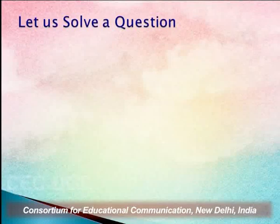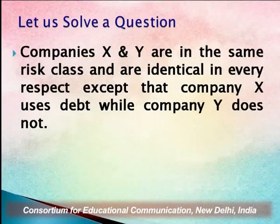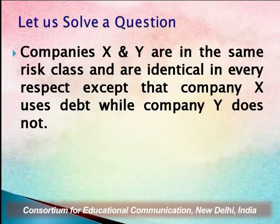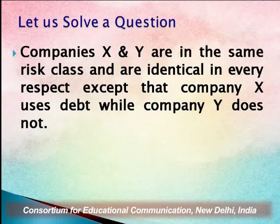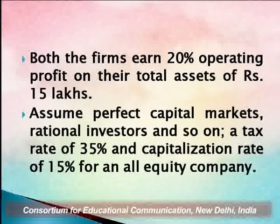Let us apply this formula to a question. Suppose we have companies X and Y — they are in the same risk class and are identical in every respect except that company X uses debt while company Y does not. Company X is therefore the levered firm, while company Y is the unlevered firm.